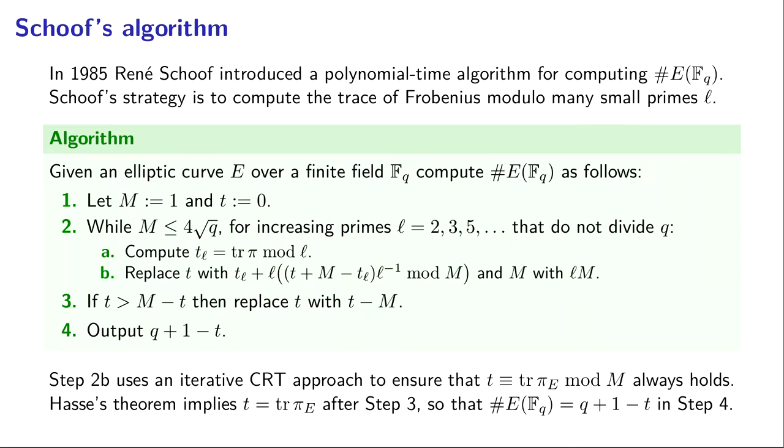For increasing primes L that don't divide Q, you're going to compute the trace of Frobenius mod L. Then you're going to use the Chinese remainder theorem to increase the modulus M that you know the trace of Frobenius to. You keep going until you have enough primes to make M bigger than 4 square root of Q. Notice the primes L you're going to be working with are not going to be that big. They're going to be on the order of the logarithm of Q. If Q is 2 to the 255 minus 19, the Ls would be going up to something quite a bit less than 255.